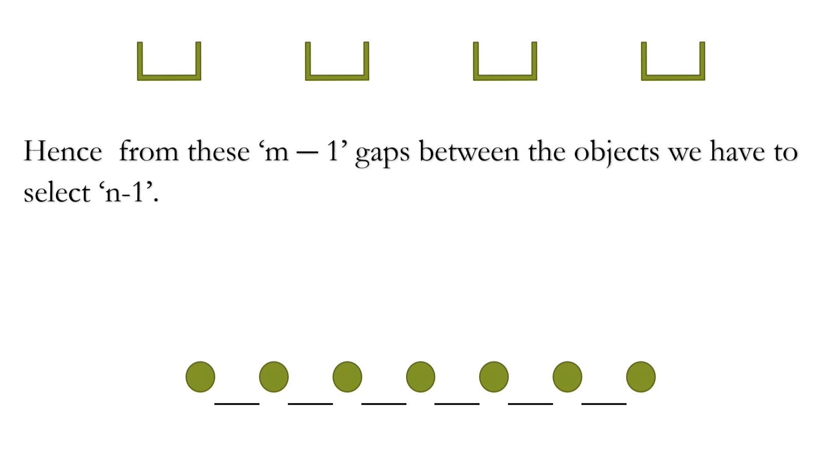What we are doing here actually. We are selecting n minus 1 things from m minus 1 things. That is from these m minus 1 gaps. We have to select n minus 1. So we can do it in m minus 1 C n minus 1 ways.